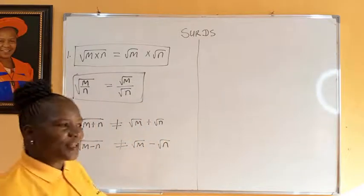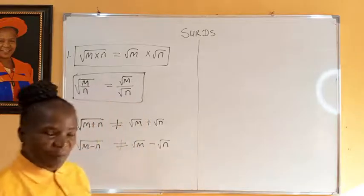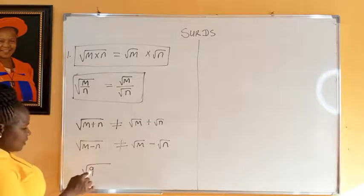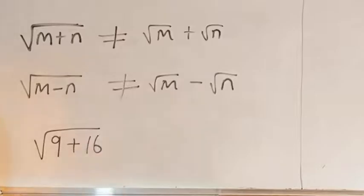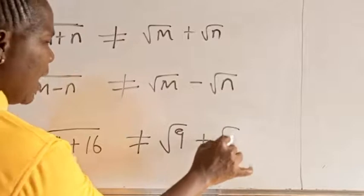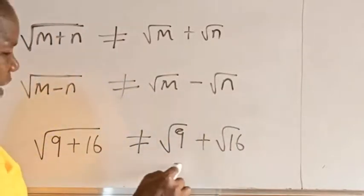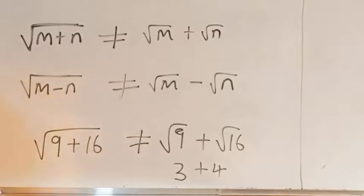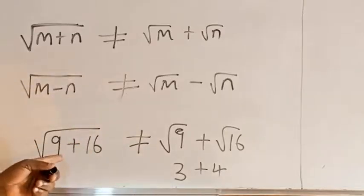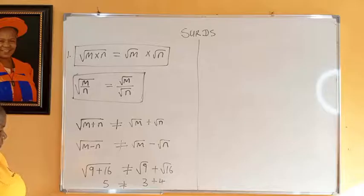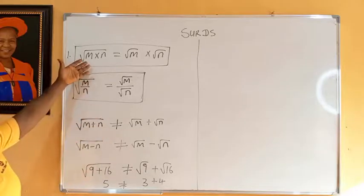You can convince yourself of this with perfect squares. For example, if you have square root of (9 plus 16), which we know is square root of 25, observe that it is not the same thing as square root of 9 plus square root of 16. Square root of 9 is 3, square root of 16 is 4, so that gives 3 plus 4, which is 7. But square root of 25 is 5. There is no way 5 is equal to 7.